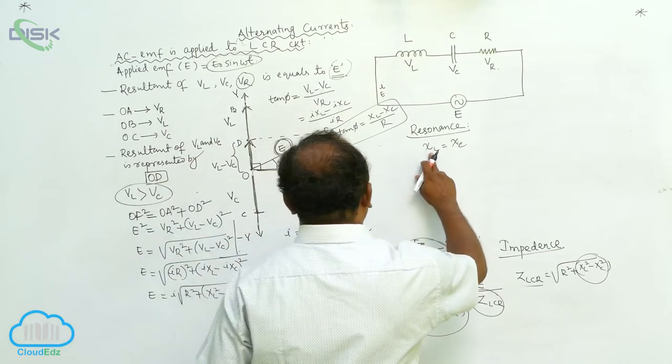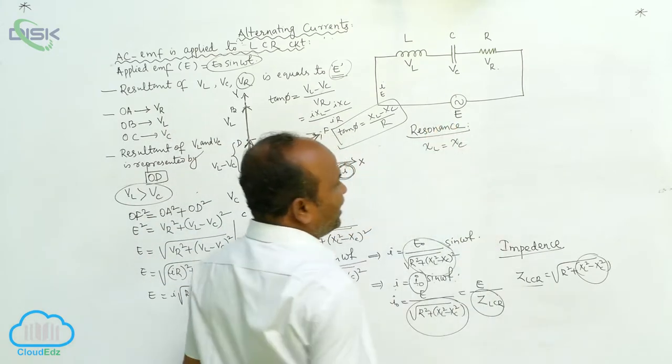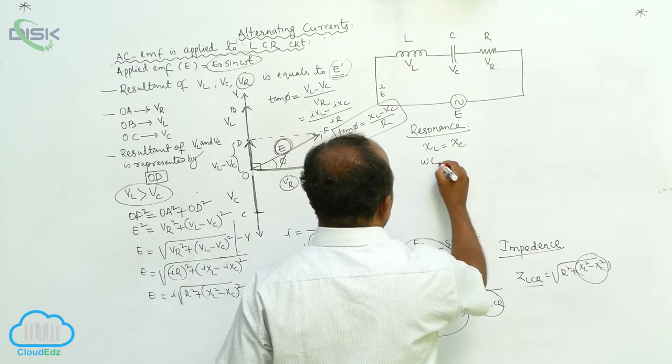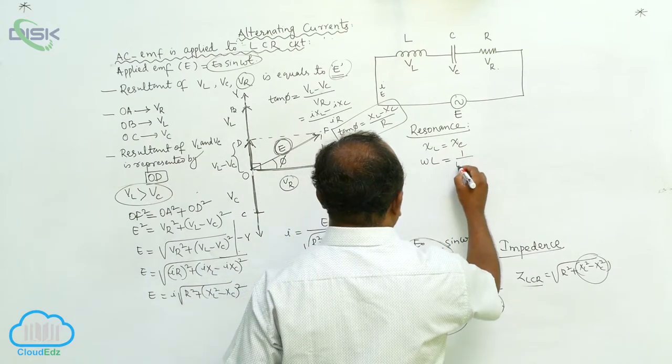Whenever it is possible, XL equals XC. XL equals Omega L, XC equals 1 by Omega C.